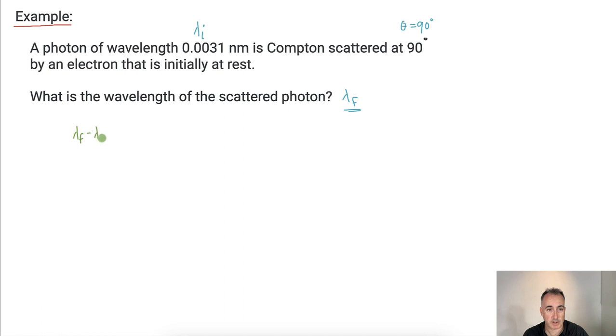Let's just write down the equation. Lambda f minus lambda i equals delta lambda. That means it's h over m_e c times 1 minus cosine of theta.